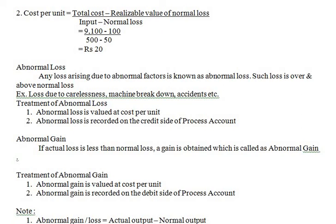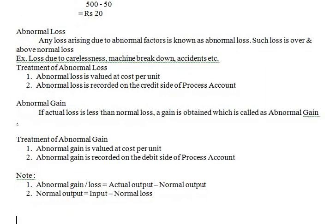Abnormal gain means if the actual loss is less than normal loss, a gain is obtained, which is called abnormal gain. Treatment: abnormal gain is valued at cost per unit, and abnormal gain is recorded on the debit side of the process account.